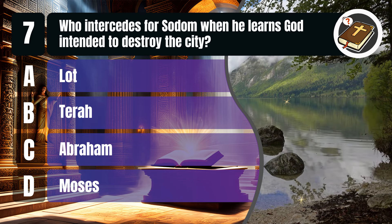That's C. Abraham. In Genesis, chapter 18, verses 22 to 33, Abraham's intercession for Sodom reveals his profound compassion and unwavering faith. He pleads with God to spare the city if even a few righteous individuals are found. This act underscores Abraham's deep concern for others' well-being and his trust in God's justice and mercy.